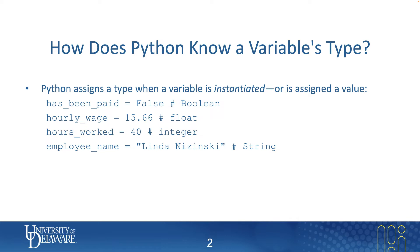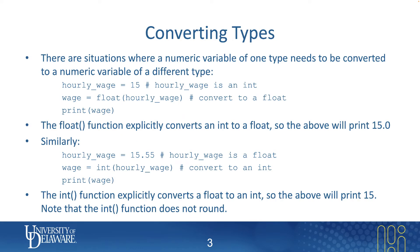Some languages require you to explicitly declare a variable's type — with Python, you do not. Now there are situations where you have to convert types, commonly between floats and ints. In the first example here, hourly_wage gets a value of 15. Since there's no decimal, hourly_wage is an integer. In the second line of code, we want wage to actually be a floating point type, so we can explicitly convert it from an integer to a float.